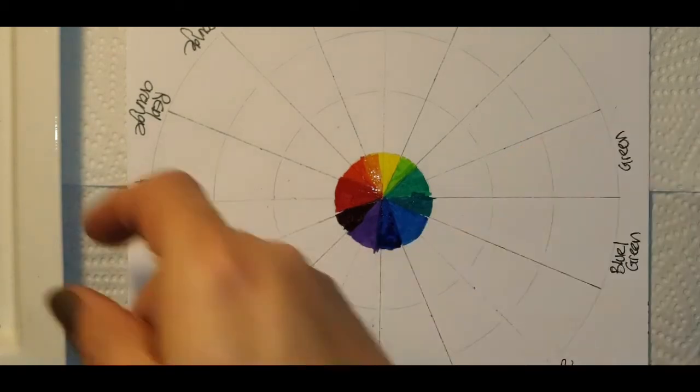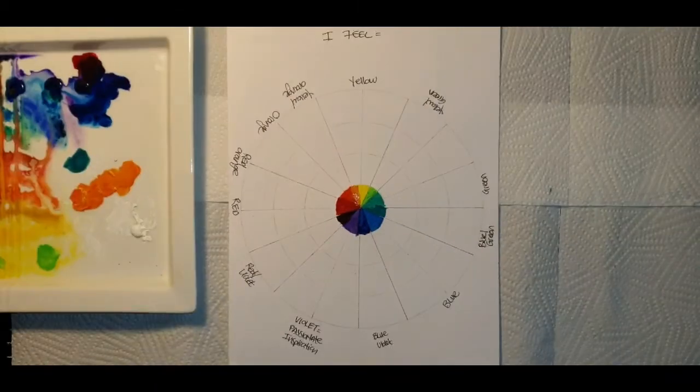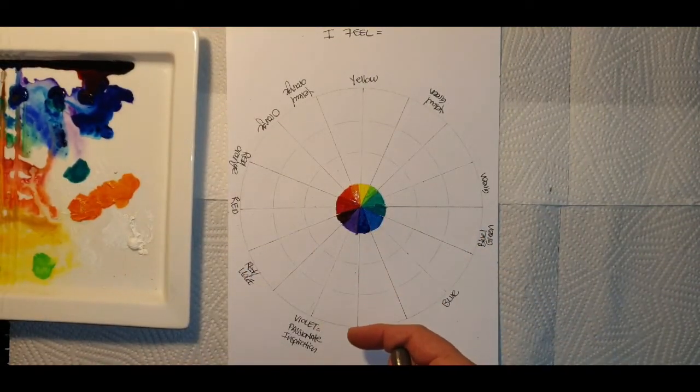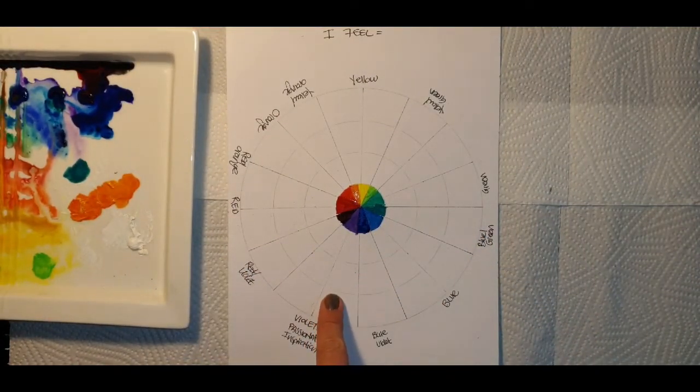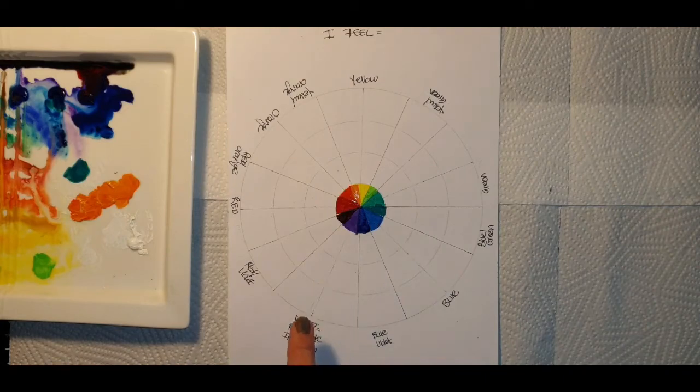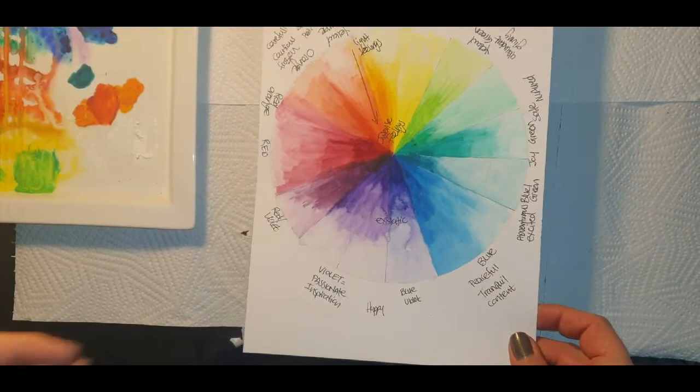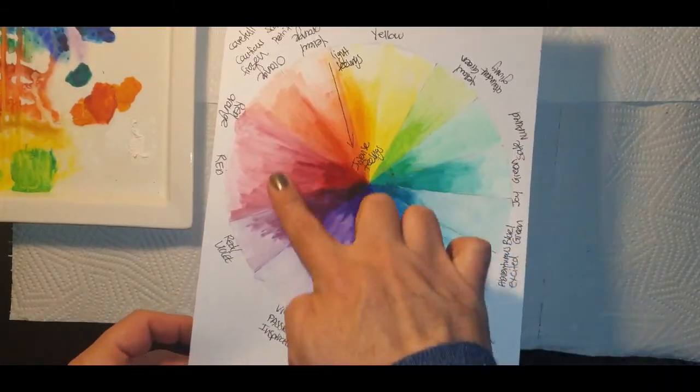So now what I want you to do is I want you to add white or water and create a lighter spectrum. So as you move to the outside of your circle with each segment, I want you to create a lighter version of the color. I've already done that for you here.